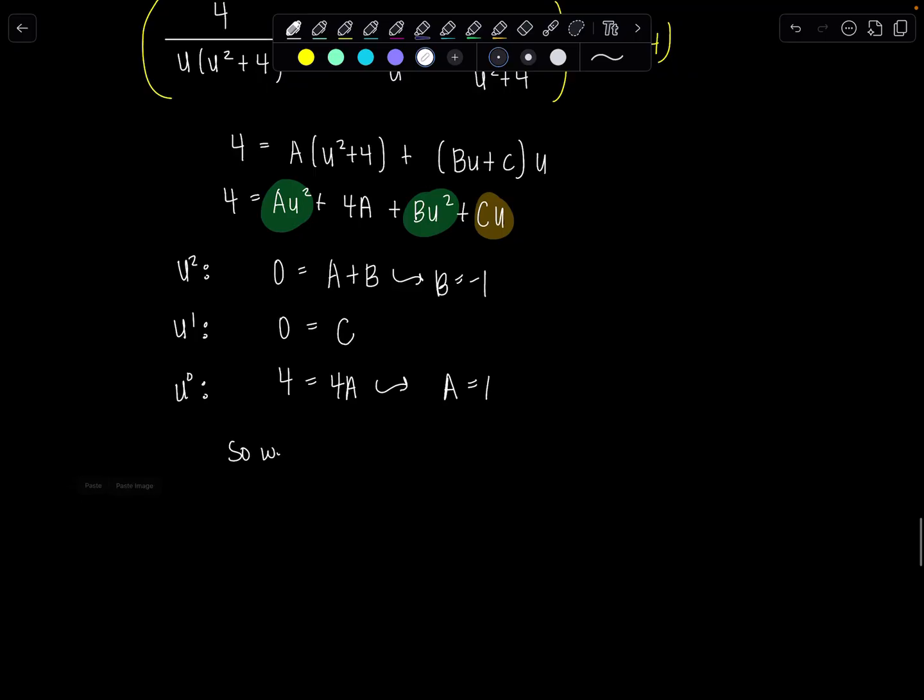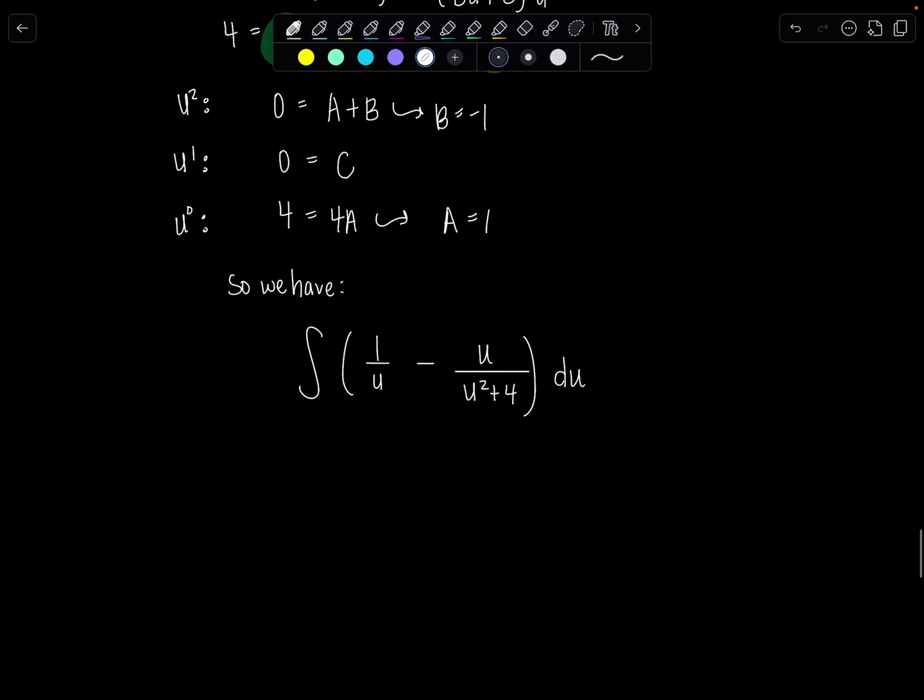All right, so now we can rewrite our integrand as follows. We have a over u, so 1 over u. And then b is negative 1, so that'll be minus u over u squared plus 4 du. Okay, very good. Now, anti-differentiate term by term, anti-derivative of 1 over u, ln absolute value of u. Minus, and then you may or may not need to write out the full substitution here to evaluate the anti-derivative of this term. We've already used up u, so pick some other variable. If you have to write it out, I would say let's let t equal u squared plus 4.